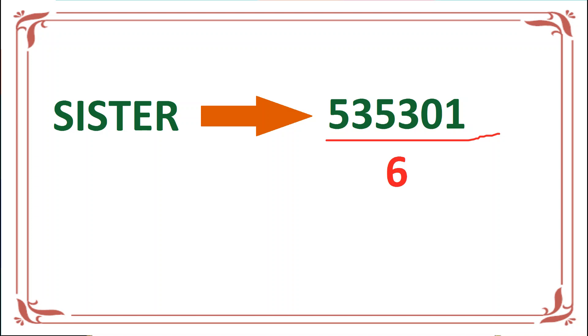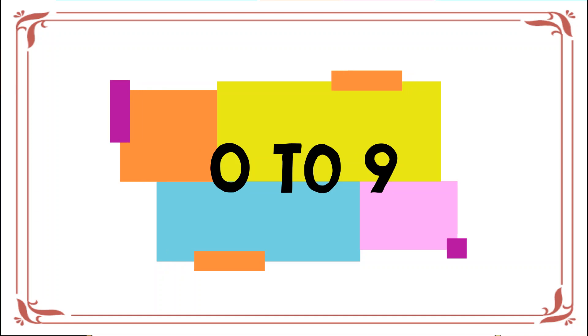So here we will denote S as 5, I denotes 3, then again S denotes 5, T denotes 3, E denotes 0, and R denotes 1. Now numbers range from 0 to 9, meaning 10 digits, and the alphabets total is 26.